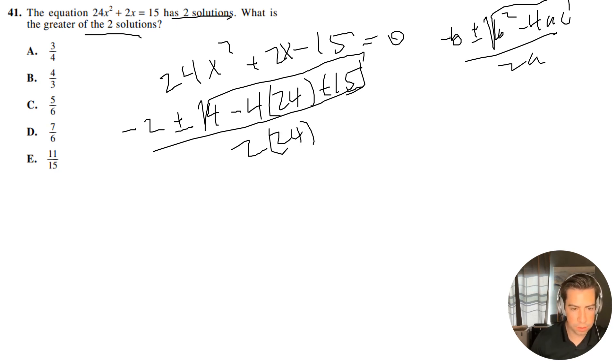All right, so at this point you can just plug it into your calculator. So -2 ± √(4 - 4×24×(-15)). That's going to give us 1,444. And then we have 2×24, which is 48.